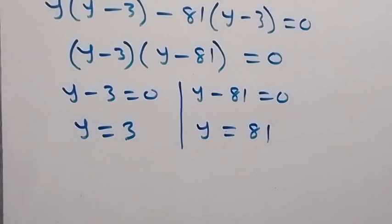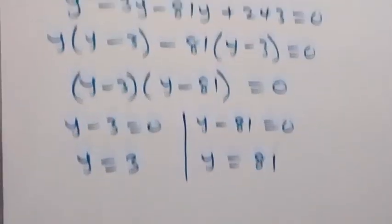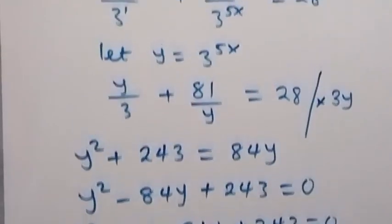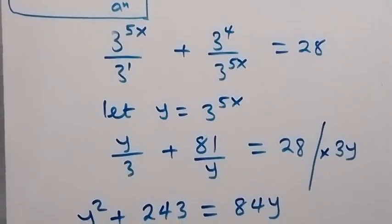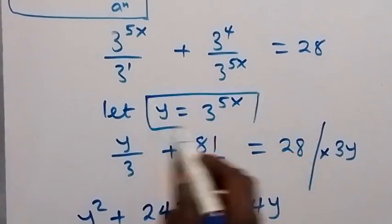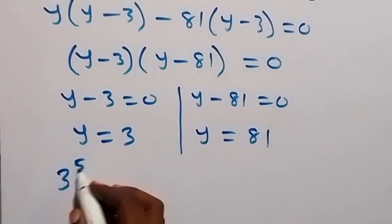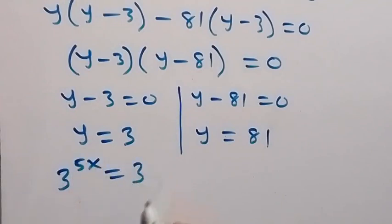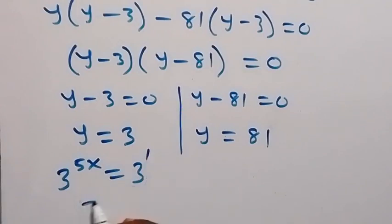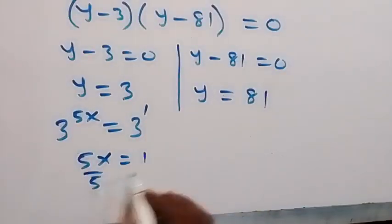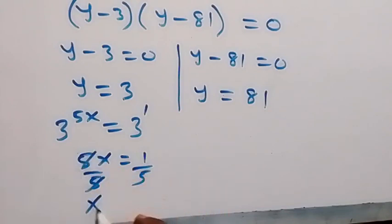Recall that we represented y as 3 raised to power 5x. So when y equals 3, we write 3 raised to power 5x equals 3 raised to power 1. With the same base, 5x equals 1, and dividing both sides by 5 gives x equals 1 over 5.